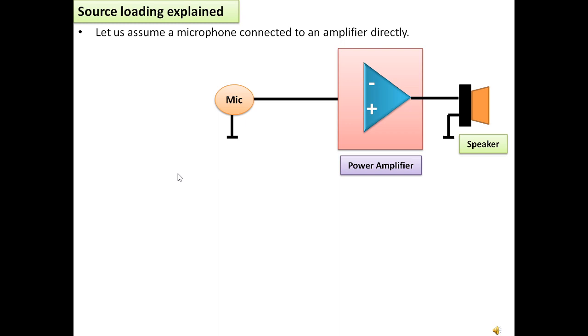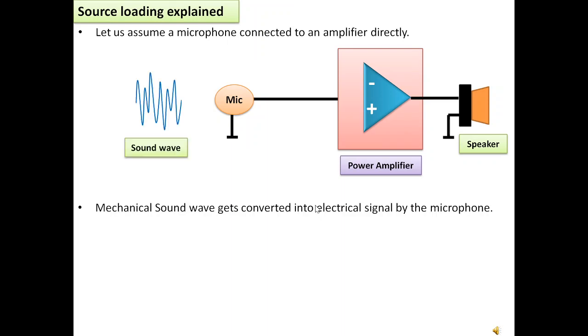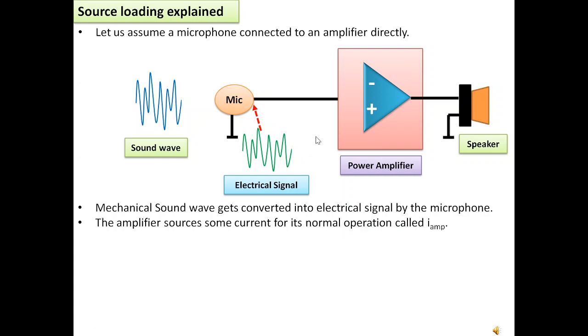Now let us see what is source loading. Let us assume a microphone that is connected to an amplifier directly. Initially the mechanical sound wave gets converted into electrical signal by the microphone. The amplifier sources some current for its normal operation and we will call it i-amp. Any audio amplifier which directly drives the speaker requires some amount of current for its normal operation.